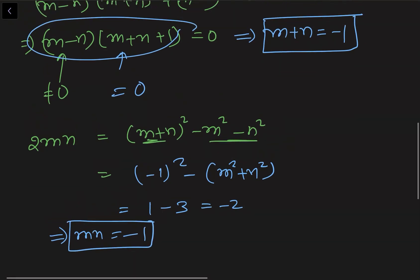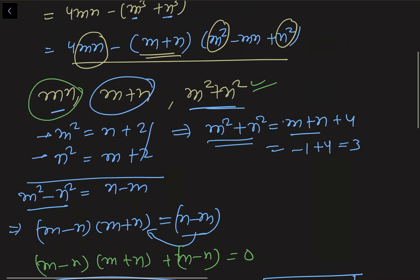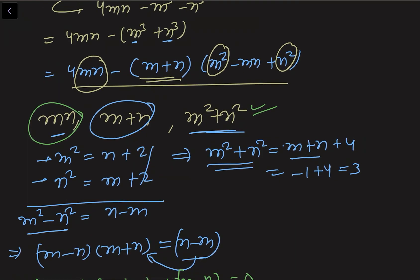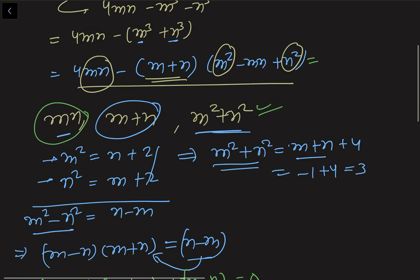So what is the expression? This is the expression. So here if I put the value what I am getting is 4 × (-1) - (-1) × (m² + n²) is what? 3. mn is what? -1. So minus minus plus. So 3 + 1. So this we are getting. So here -4 + 4 which comes out to be 0. So 0 is our final answer.